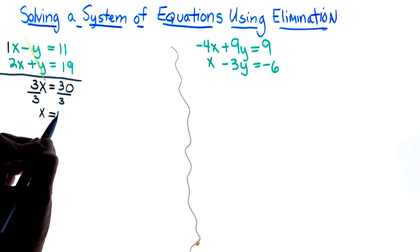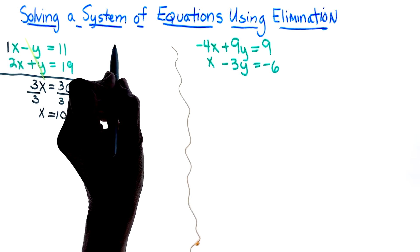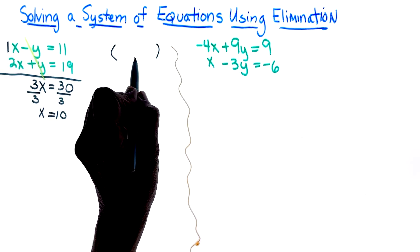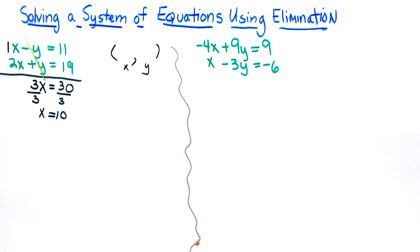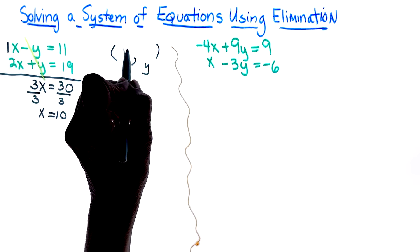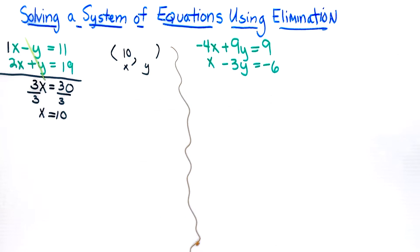3x is equal to 11 plus 19 is 30, and I'm going to divide both sides by 3, and so I get x is equal to 10. Well, when I have a system of equations my answer is always going to be an ordered pair, so I am going to go ahead and I'm just going to put my 10 in there, so I have half of my answer.